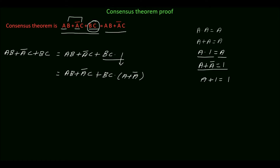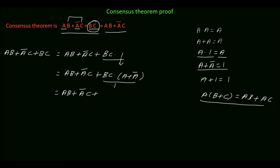This gives us AB + A'C + BC·(A + A'). Distributing, this becomes AB + A'C + ABC + A'BC. Rearranging the terms we have: AB + ABC + A'C + A'BC.